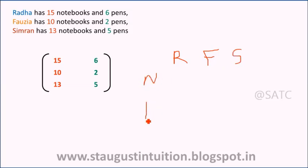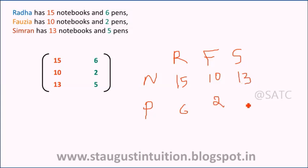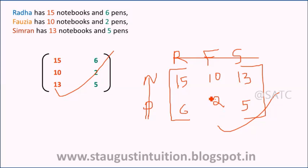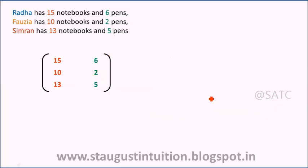We organize the data by notebook and pen columns. First, Rad: 15 notebooks, 6 pens. Fauce: 10 notebooks, 2 pens. Then Simra: 13 notebooks, 5 pens. Now we are going to represent this data as a matrix. This is the matrix.